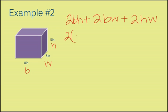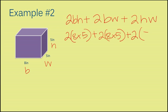So, I have 2 and my base is 8 times H, which is 5, plus 2. And my base is 8 times 5. Those two terms, the first two terms this time, ended up looking exactly the same. And that's because my width and my height are both exactly the same. They're both 5. And then I'm going to add that to 2. And my height is 5 times my width, which is also 5.